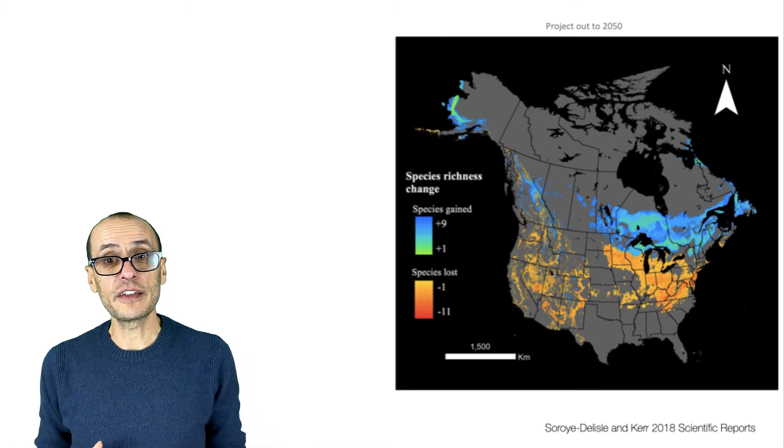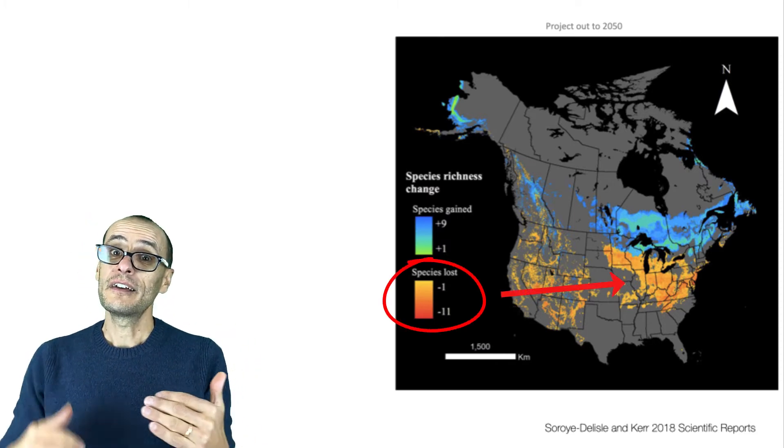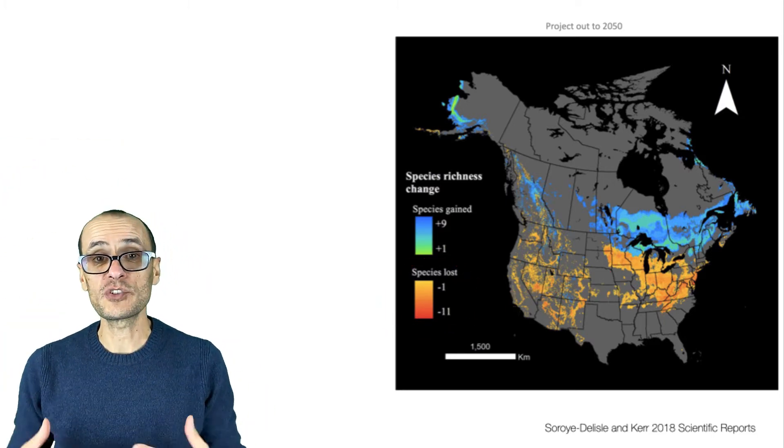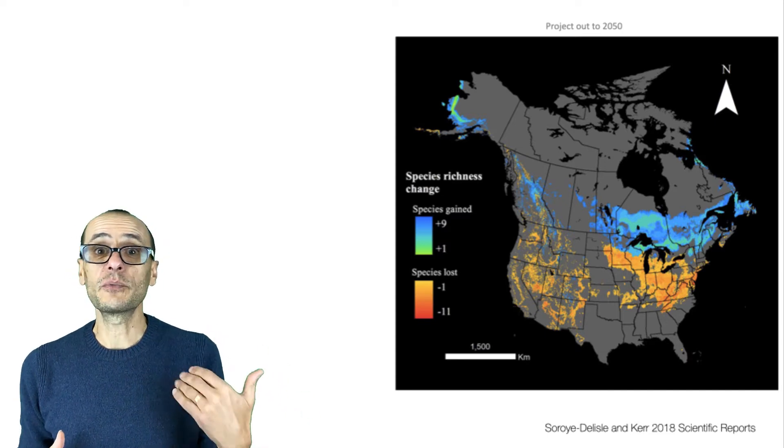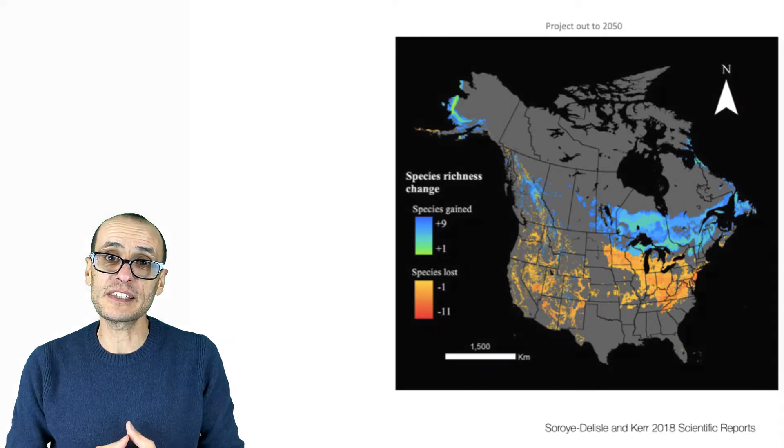Other areas in the south, on the other hand, will lose them, and they lose them at a greater rate than those that are gained in the north as the climate becomes more unsuitable at these southern edges. And this is consistent with the previous findings that bumblebees just can't perfectly keep up with the changing pace of the climate.